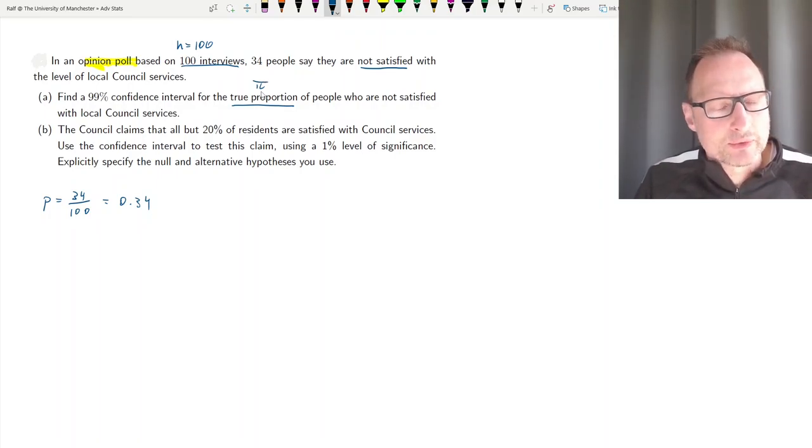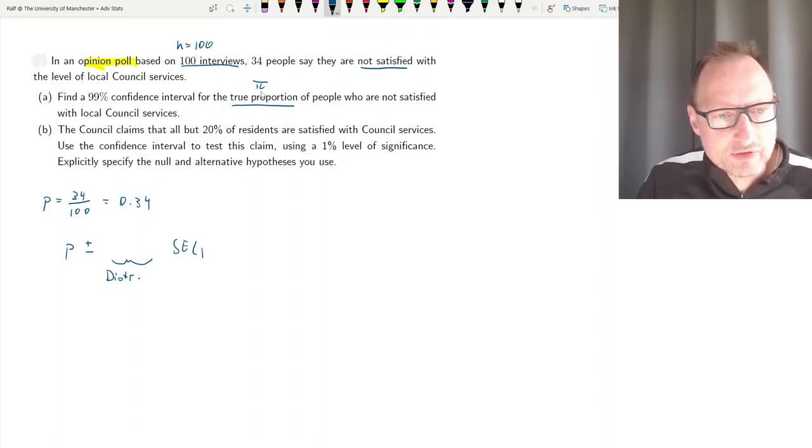As usual when we're calculating a confidence interval, we take our sample proportion plus minus something that comes from a distribution, and then times the standard error of that sample proportion. The standard error of the sample proportion is going to be calculated by p times 1 minus p, or p is the sample proportion, divided by n. That's where we get the standard error of the sample proportion from.